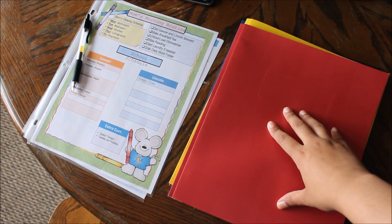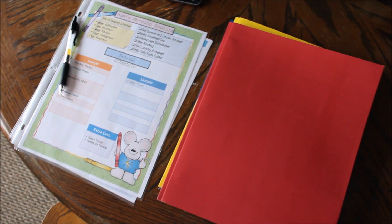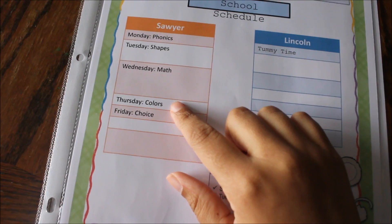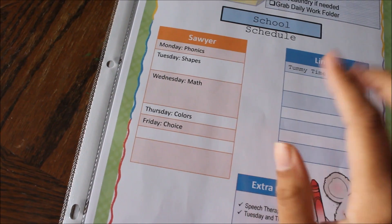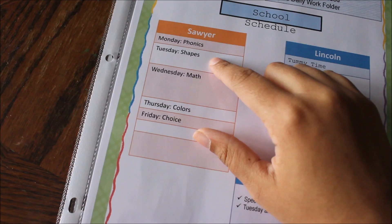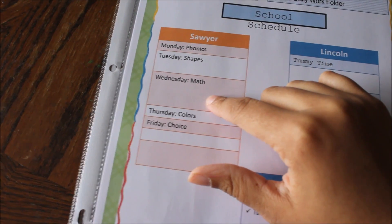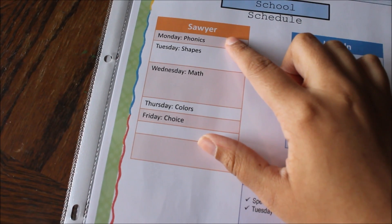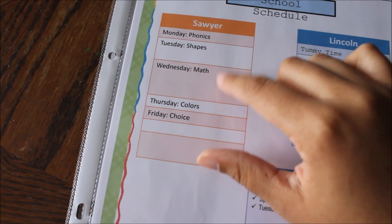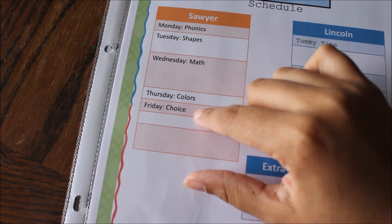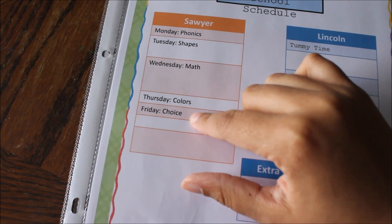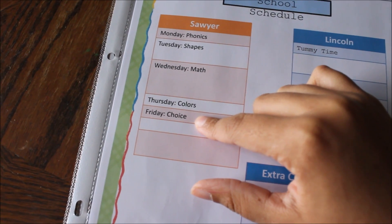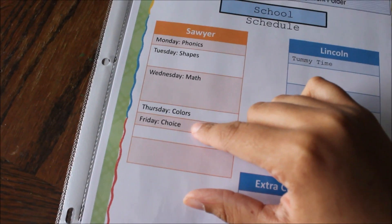So the reason I'm showing this page, if you've seen my homeschool binder video you would have already seen this, but it says what we're doing on each day. Monday is phonics, Tuesday is shapes, Wednesday's math, Thursday's colors, and Friday's choice. So Friday could be something to do with animals, a craft, so it's basically just a fun day.